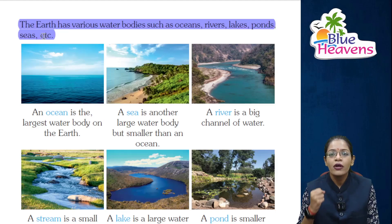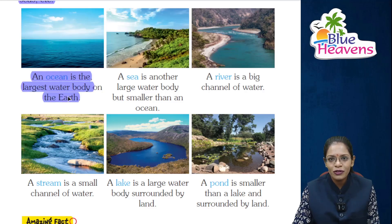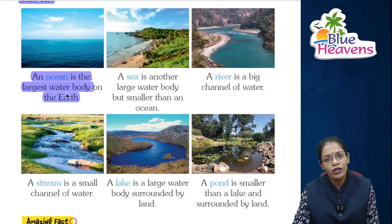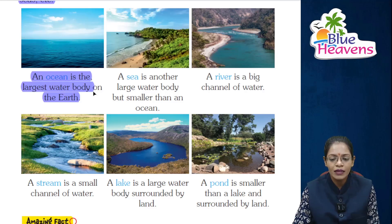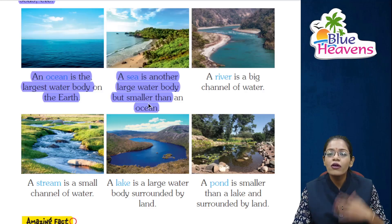An ocean is the largest water body on the Earth — it has the most water. A sea is another large water body but smaller than the ocean.